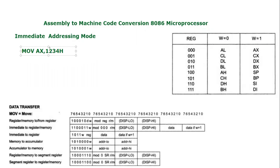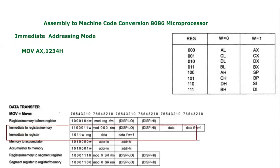In this video tutorial I'm going to tell you how one can convert this kind of instruction into machine code. MOV AX, 1234h is an immediate addressing mode. I've taken a snapshot of the book I've already recommended in my video course. In this snapshot there are various kinds of instructions and their specific instruction format is given in this chart. The thing we are going to discuss is immediate to register — or immediate to register or memory — and specifically I'm targeting only immediate to register.